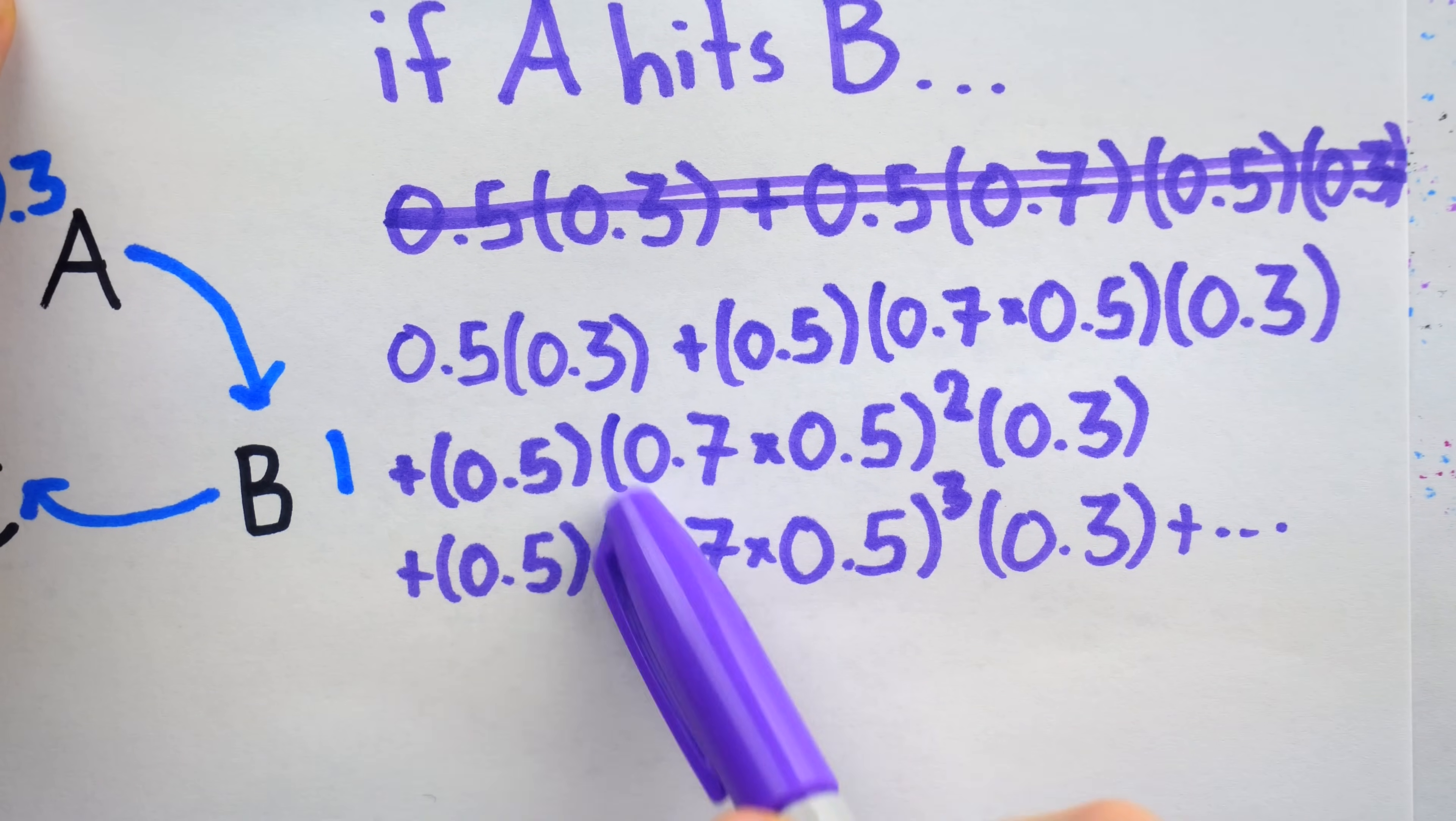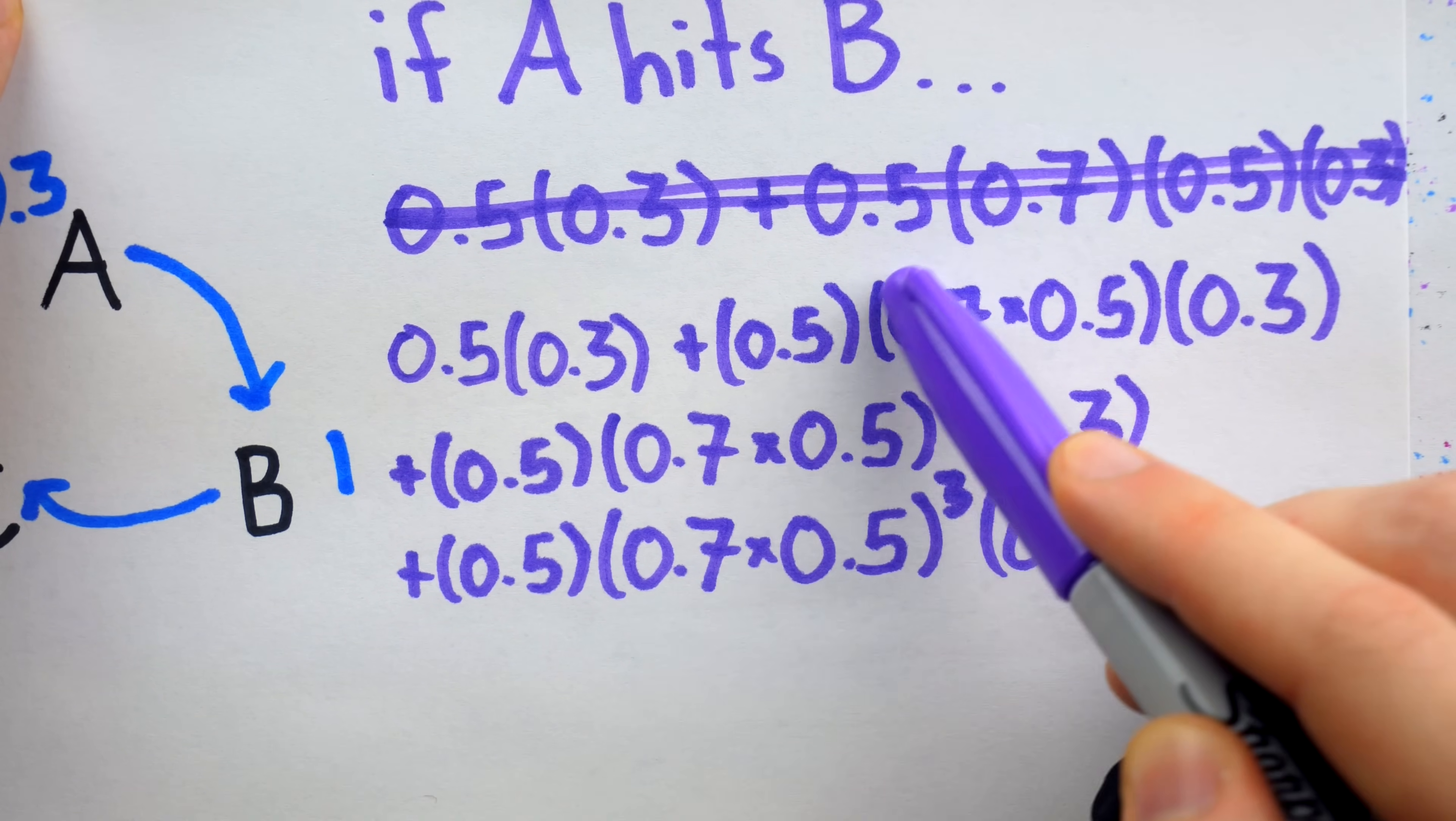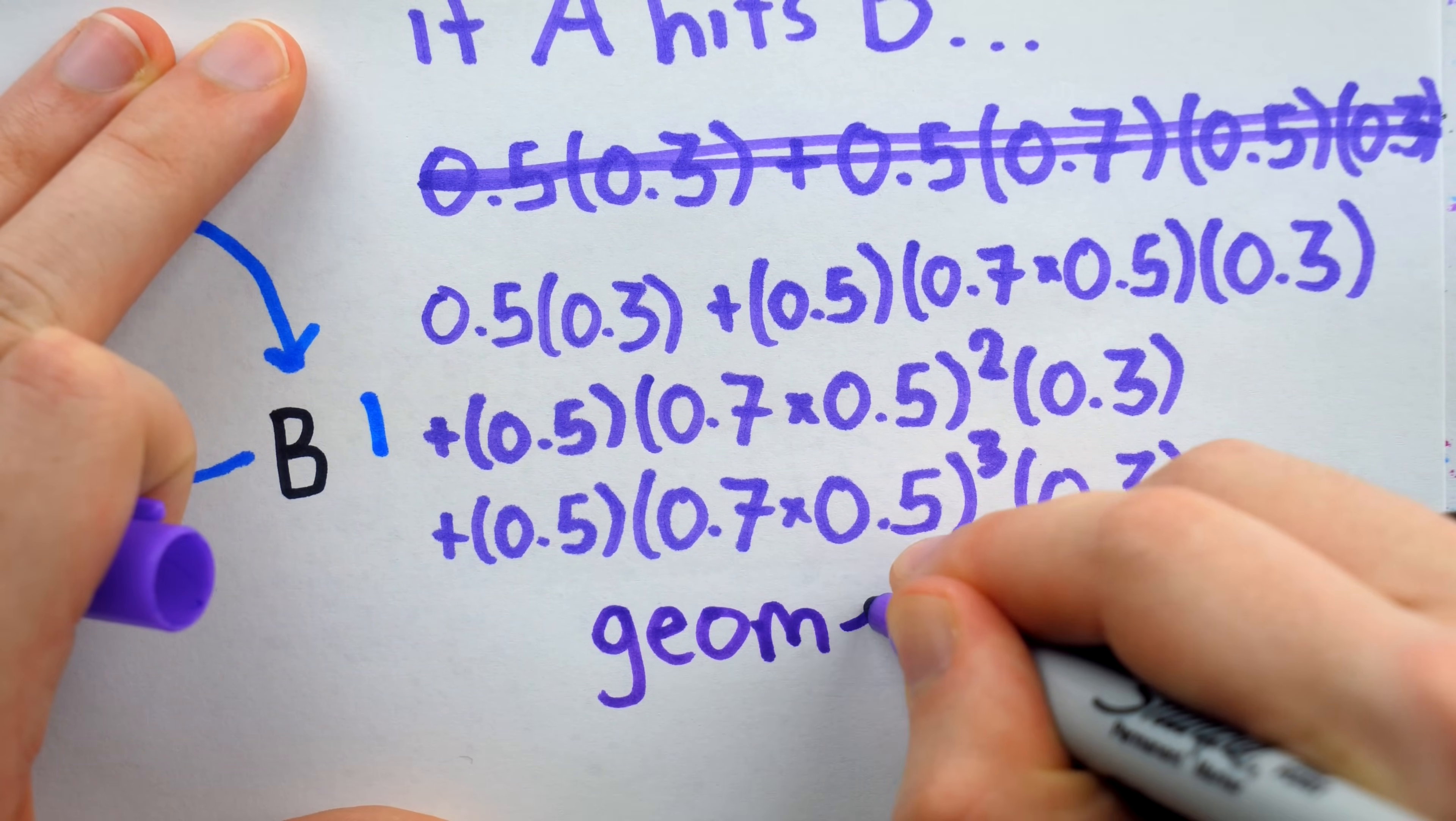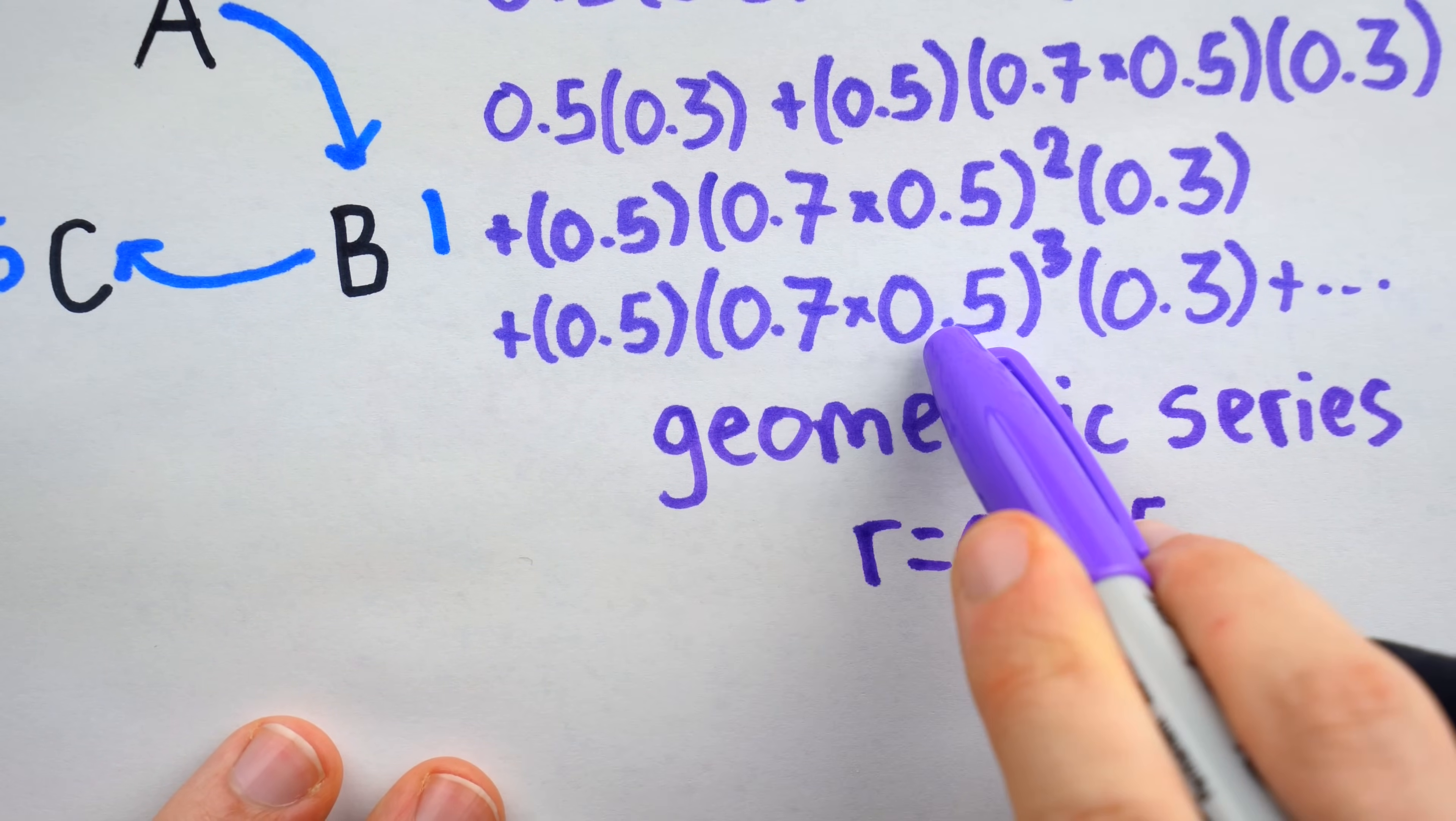Because this is an infinite sum, it's what we call a series. And notice how every term in the series is just the previous term multiplied by an additional factor of 0.7 times 0.5. Multiply this by 0.7 times 0.5, we get there. Multiply by 0.7 times 0.5 again, we get here. And so on. Hence, this is an example of a geometric series, a very well-known type of infinite sum. In particular, we would say this is a geometric series with R equal to 0.35. That's the common ratio between the terms. 0.35, which is 0.7 times 0.5. That's what we're multiplying each term by to get the next one.